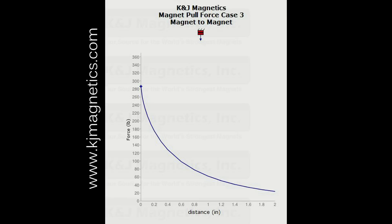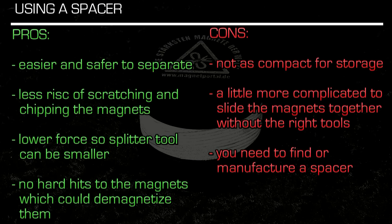Here's an illustration from KNJ Magnetics. In this example, the pull force without a spacer is around 285 pounds between the magnets. With a spacer only 0.8 of an inch thick, the pull force between the magnets drops to under 80 pounds, or under a third of the force without a spacer. I recommend using a spacer.